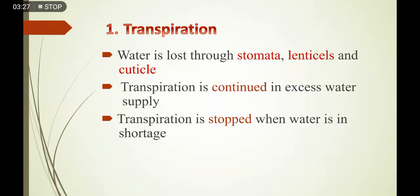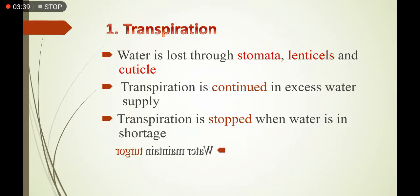Transpiration is stopped when the water is in shortage — جب پانی کی کمی کے environment میں plant survive کریں تو rate of transpiration کم کر دیا جاتا ہے۔ Water also maintains the turgor pressure in the plant cells — اس turgor کی وجہ سے plants اپنی body کی upright structure کو maintain رکھتے ہیں اور wilting کو resist کرتے ہیں۔